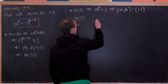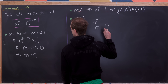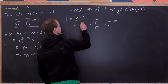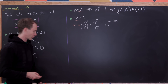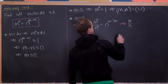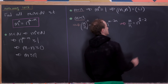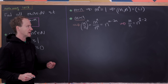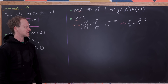Dividing by n to the nth gives us m to the nth over n to the nth on the left-hand side, and n to the m minus 2n on the right-hand side. The left-hand side is m over n raised to the n power. Taking the nth root of both sides gives us m over n on the left and n to the power m over n minus 2 on the right. We still have two variables: m over n and n.